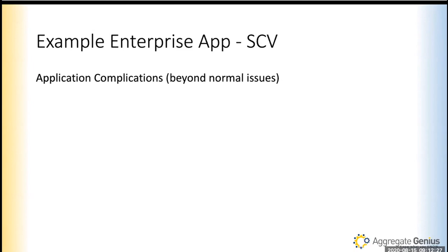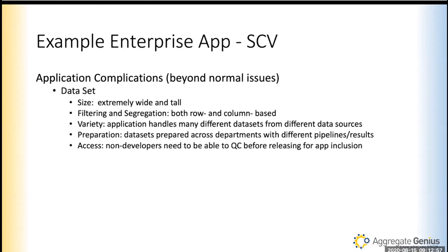One thing I get asked often is: what does an enterprise Shiny app look like? Enterprise apps have complications beyond normal Shiny issues. Usually the data set is very big — wide and tall — and users want to filter and segregate on both rows and columns. They want interactive filtering and the ability to handle data from different sources. In an enterprise, those sources usually have different pipelines, formats, and structures — you're bringing a lot of different fruit together to make a fruit basket.